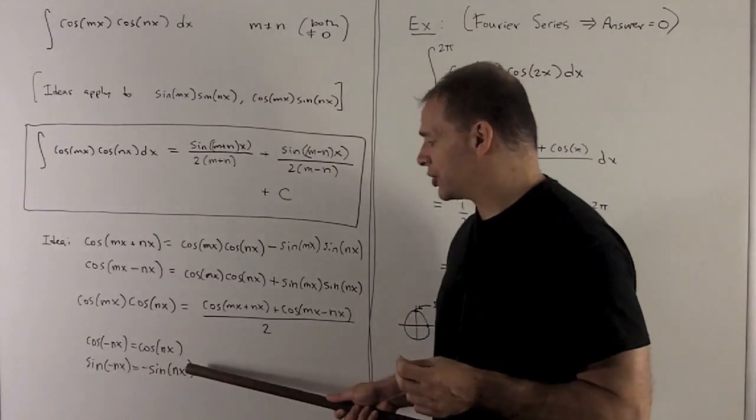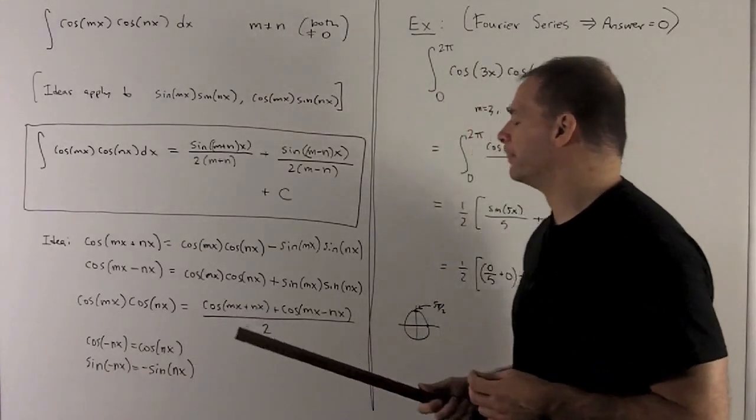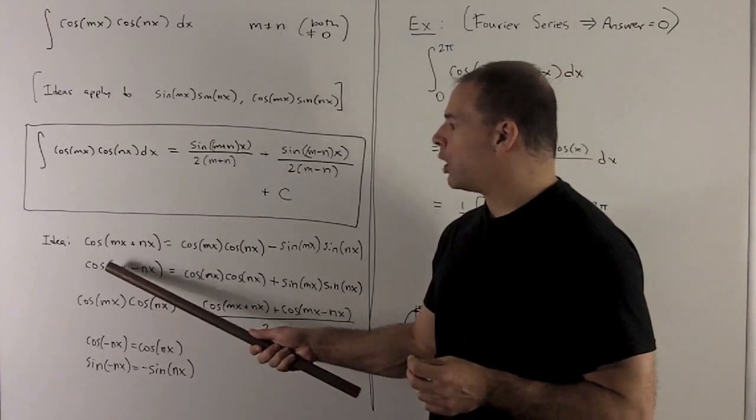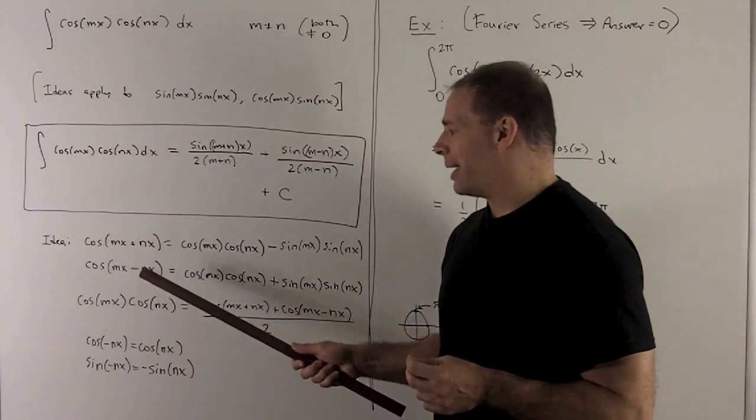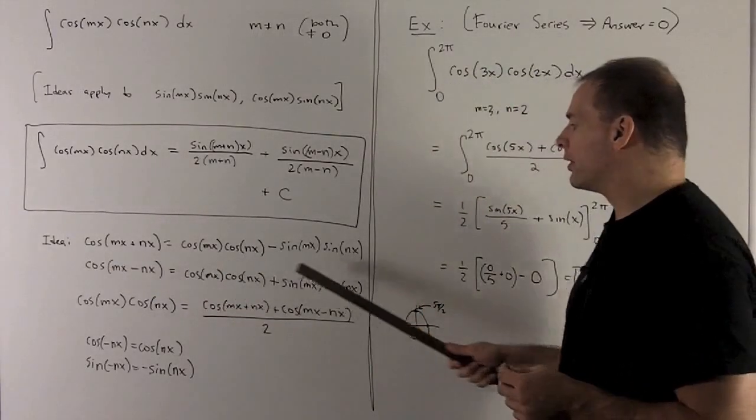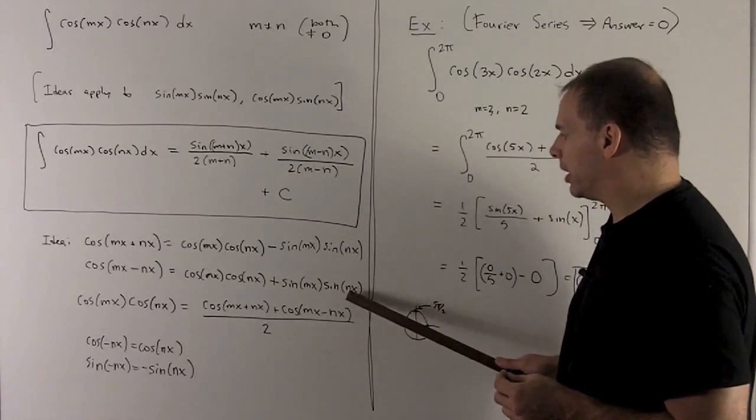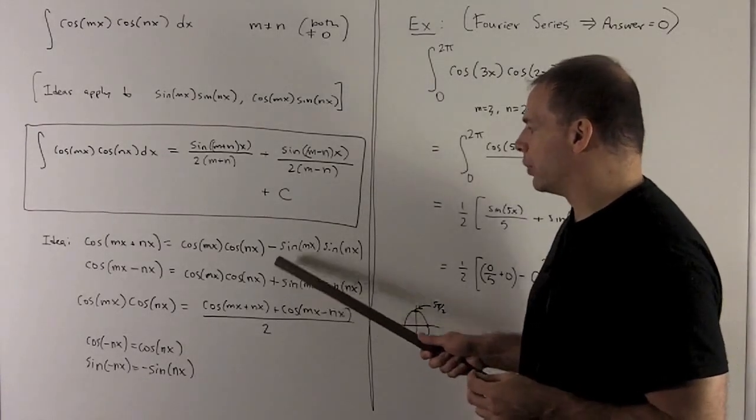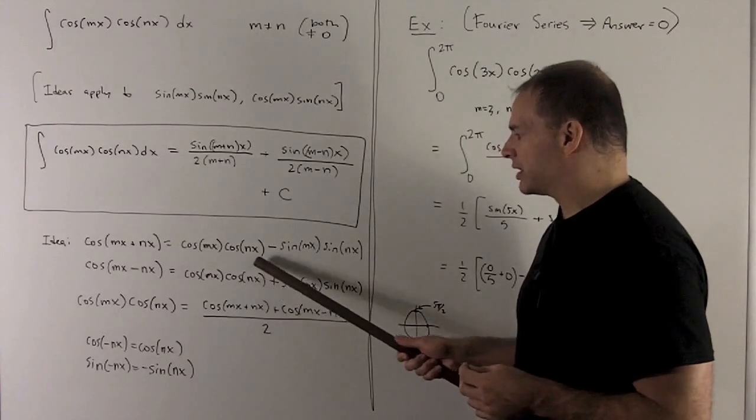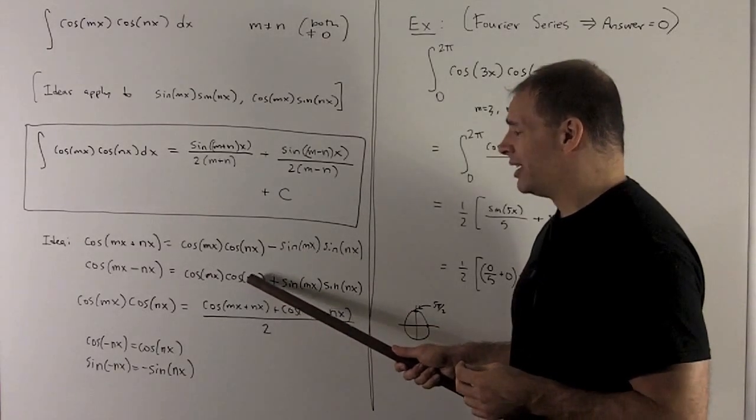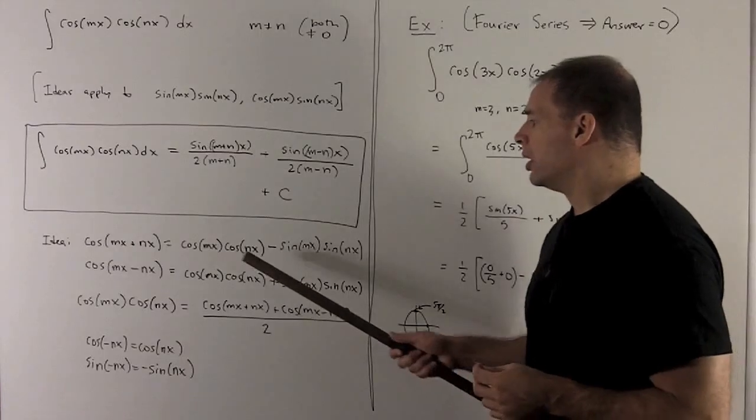Sine is an odd function, so a minus sign on the inside is just going to pull out as a minus sign. So, if I use the same rule applied to mx and minus nx, I rewrite the formula and note that the minus nx that would appear here is going to come out and cancel with this minus sign, and then the minus nx we stick inside of this cosine just disappears.